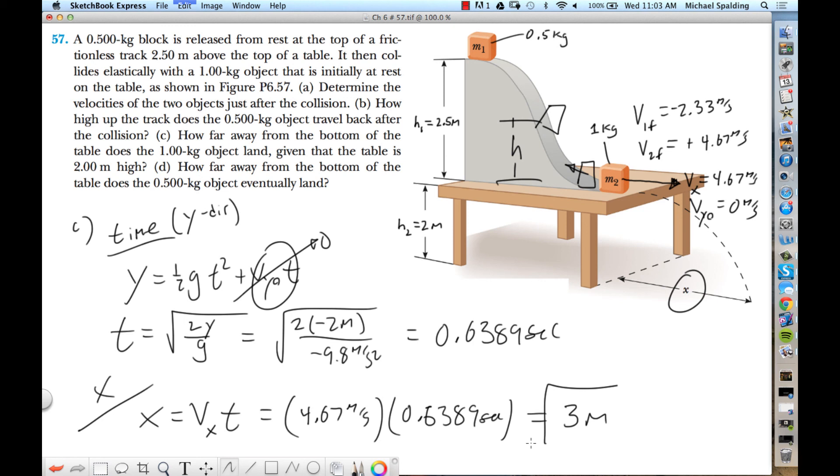And then D, how far away from the bottom of the table does the 0.5 kilogram object land? M1 goes up the hill and back down the hill. How fast will M1 be traveling when it reaches the bottom of the table? 2.33. After the collision it was going 2.33 meters per second up the hill. When it returns, because there's no friction, it's going to be going 2.33. So to answer part D, will time in the air be the same? Yeah. So all you've got to do is change this 4.67 to 2.33, and that makes the answer 1.5. So the answer to part D is 1.5.